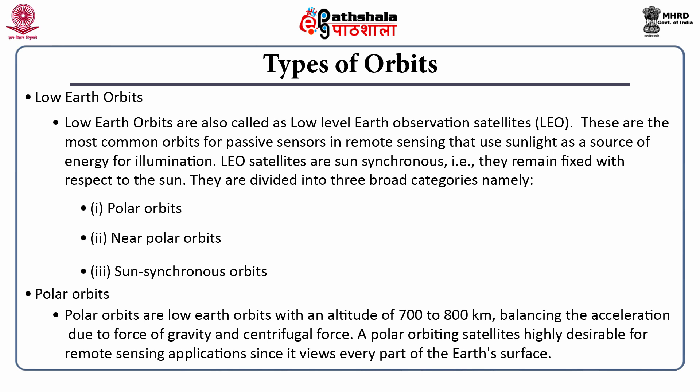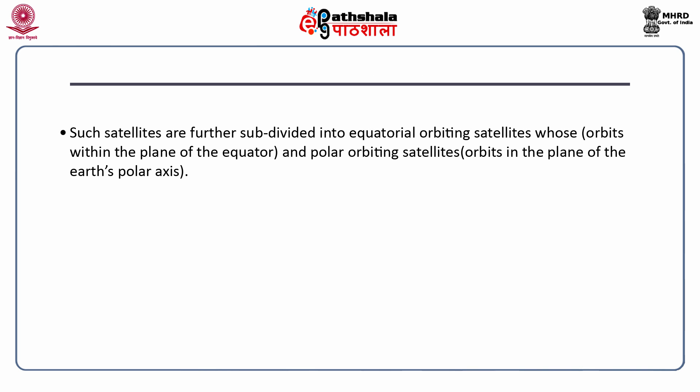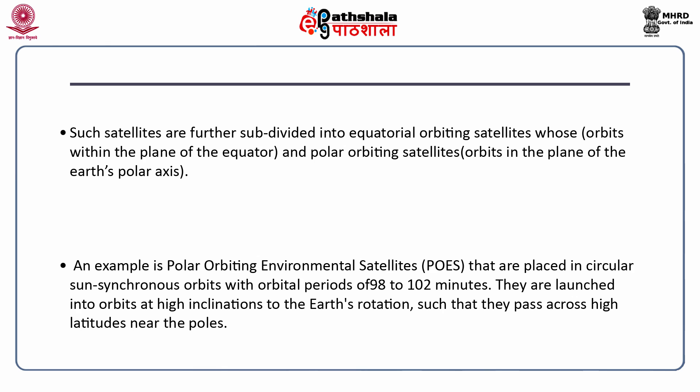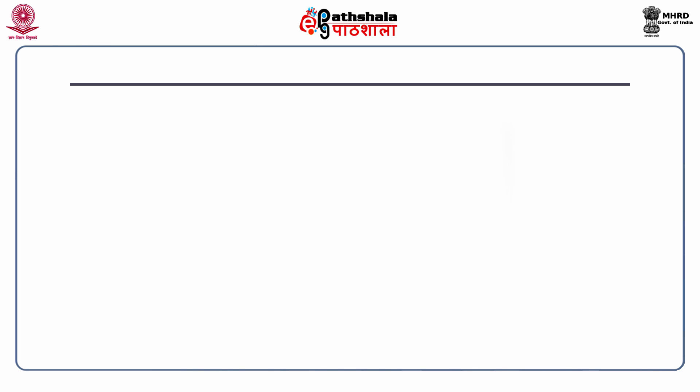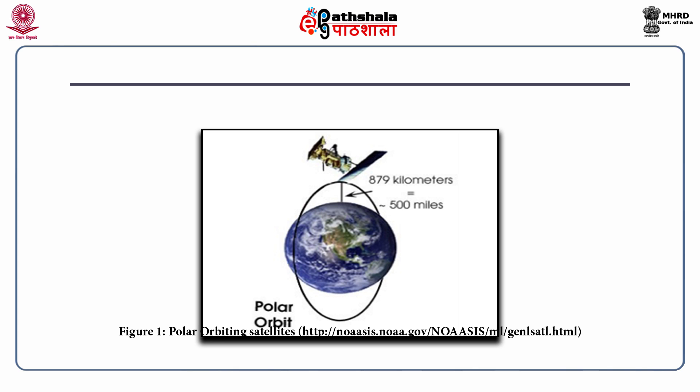A polar orbiting satellite is highly desirable for remote sensing applications since it views every part of the Earth's surface. Such satellites are further subdivided into equatorial orbit satellites, whose orbits are within the plane of the equator, and polar orbiting satellites, whose orbits are in the plane of the Earth's polar axis. An example is polar orbiting environmental satellites, also called POES, placed in circular sun synchronous orbits with orbital periods of 98 to 102 minutes, launched into orbits at high inclination to pass through high latitudes near the poles. Figure one shows an example of polar orbiting satellites with the orbit just above the poles at an altitude of about 500 miles.